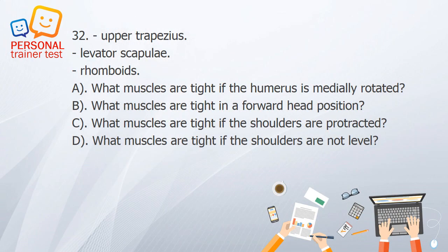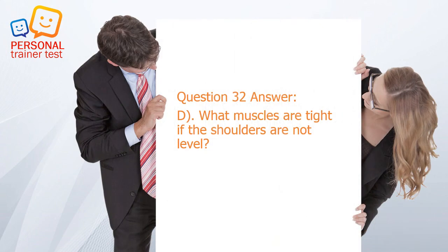Question 32. A. What muscles are tight if the humerus is medially rotated? B. What muscles are tight in a forward head position? C. What muscles are tight if the shoulders are protracted? D. What muscles are tight if the shoulders are not level? Answer: D. Upper trapezius, levator scapulae, and rhomboids are tight if the shoulders are not level.